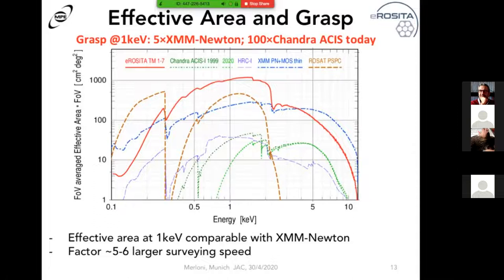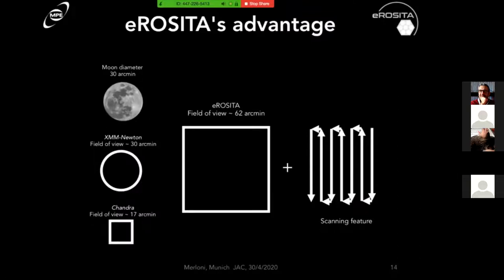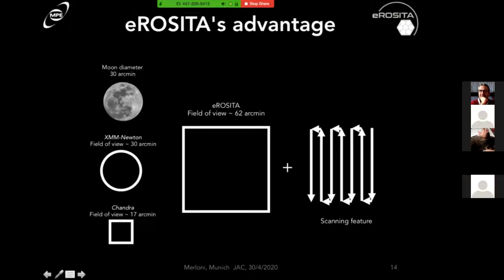Another unique characteristic of SRG is the ability to do so-called raster scanning. You can design fields of view as large as 100 up to maybe 140 square degrees in different rectangular shapes, giving very uniform exposure over very large areas — much larger and more uniform than any point-and-stare survey you could do with XMM. We are operating the telescope in survey mode, scanning the sky continuously.